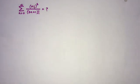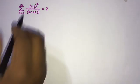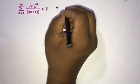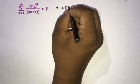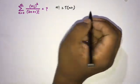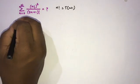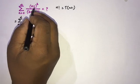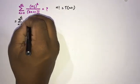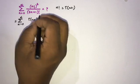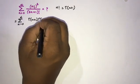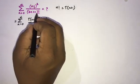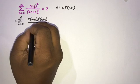To begin, in the numerator we have n factorial. We know n factorial is equal to gamma of n plus 1. So we can write this as an infinite sum from 0 to infinity, replacing n factorial with gamma of n plus 1, squared.